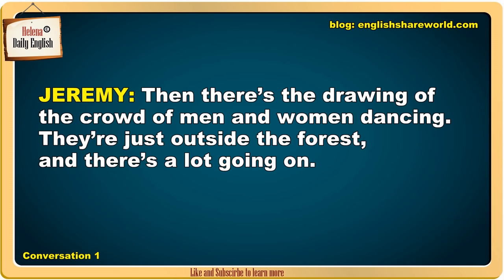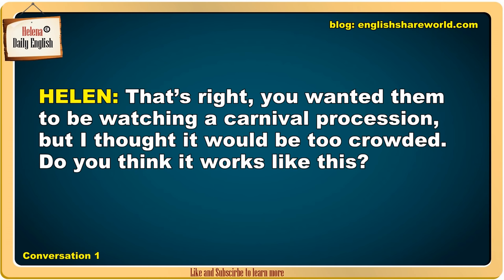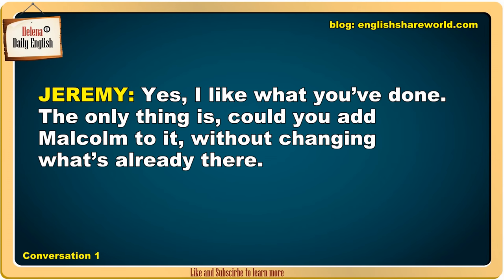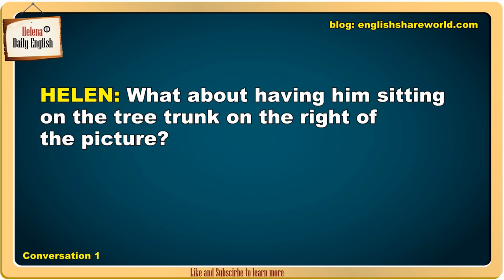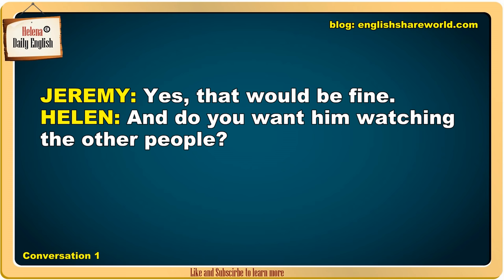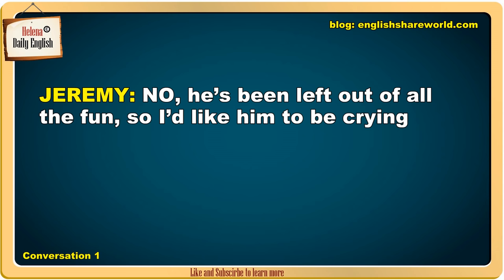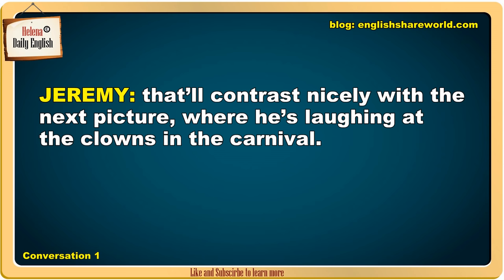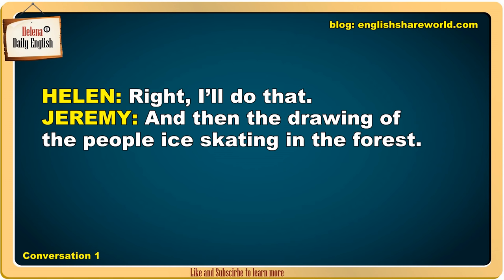Then there's the drawing of the crowd of men and women dancing. They're just outside the forest, and there's a lot going on. You wanted them to be watching a carnival procession, but I thought it would be too crowded. Do you think it works like this? Yes, I like what you've done. The only thing is, could you add Malcolm to it without changing what's already there? What about having him sitting on the tree trunk on the right of the picture? Yes, that would be fine. And do you want him watching the other people? No, he's been left out of all the fun, so I'd like him to be crying. That'll contrast nicely with the next picture, where he's laughing at the clowns in the carnival. Right, I'll do that.